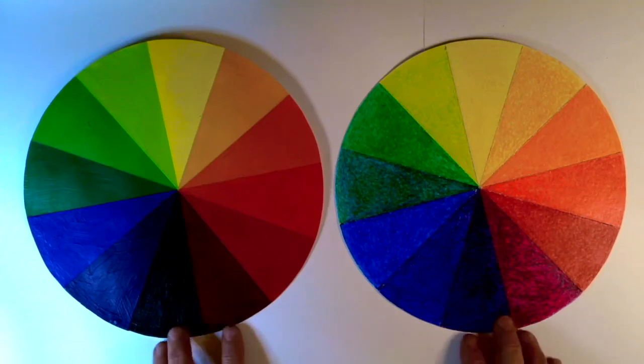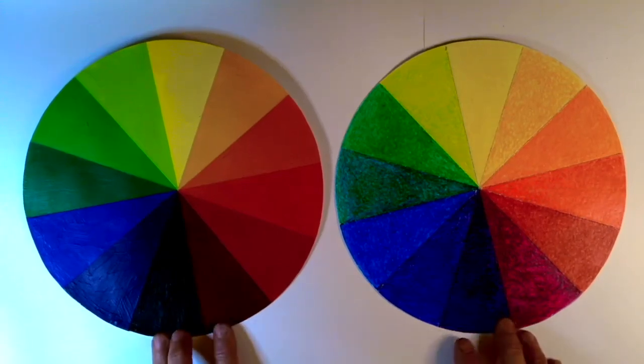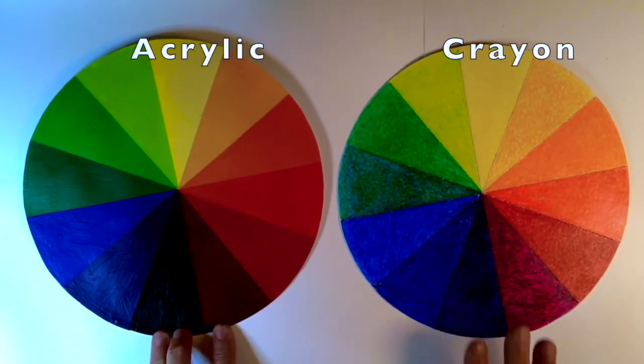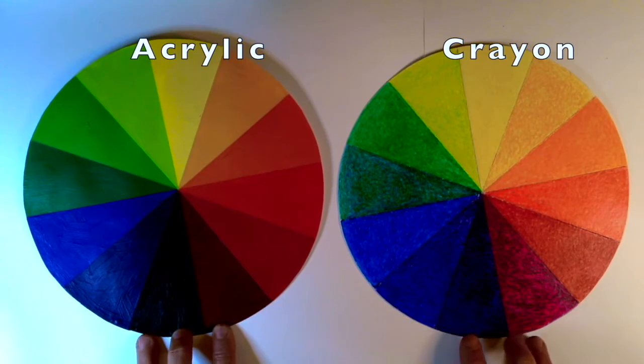I've created two color wheels here, one in acrylic and one in crayon. I wanted students to see the difference in media and compare and contrast the two different media with each other.